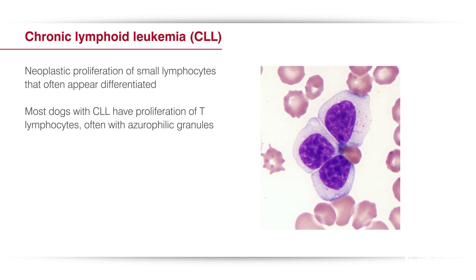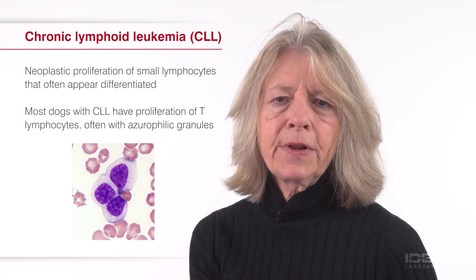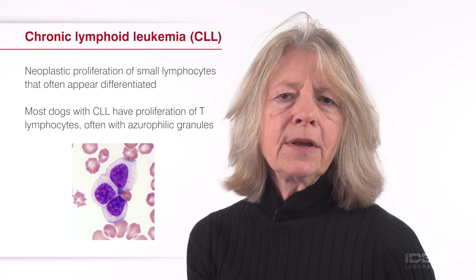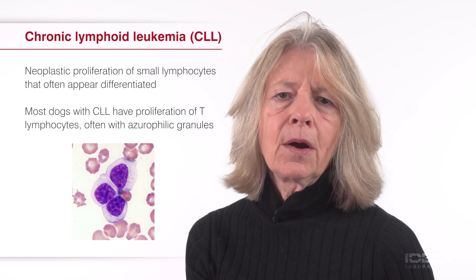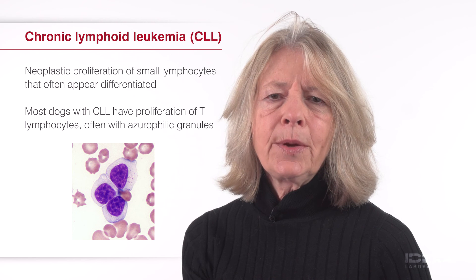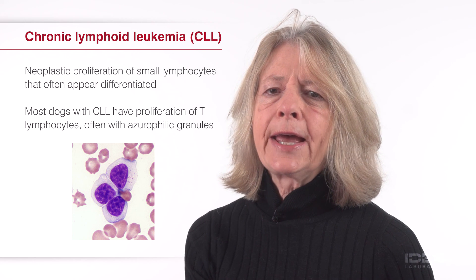In most dogs with CLL, the proliferating neoplastic cells are T-cell lineage, and most of these are large granular lymphocytes, which is a subset of T-lymphocytes characterized by azurophilic granules in the cytoplasm. Non-regenerative anemia, if present, typically is mild. Neutropenia and thrombocytopenia are uncommon. The bone marrow and spleen may be infiltrated with neoplastic lymphocytes, but peripheral lymphadenopathy usually is absent.